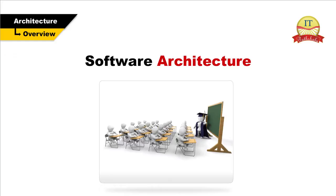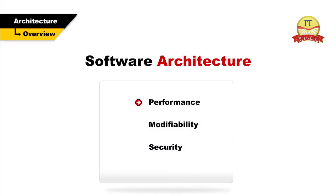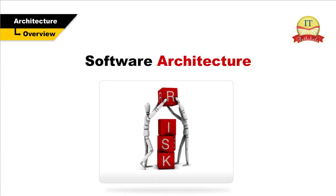The architecture is the primary carrier of system qualities such as performance, modifiability and security, none of which can be achieved without a unifying architectural vision. By building effective architecture you can identify design risks and remove them early in the development process.